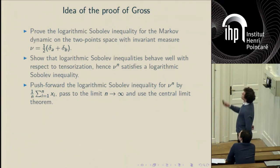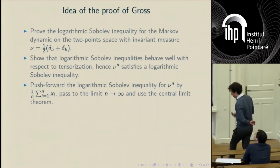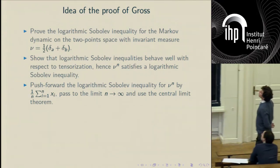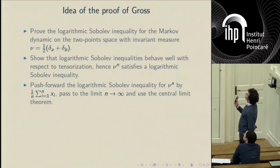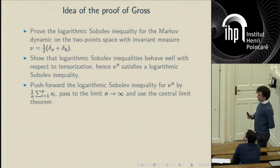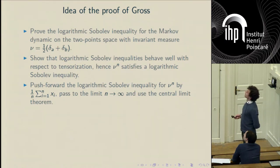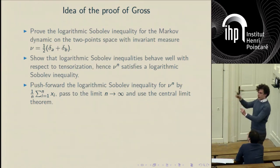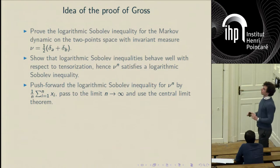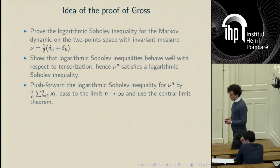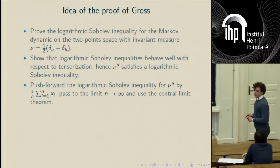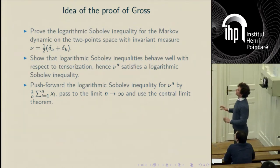I will give a very short overview of the proof by Gross. First, you prove a logarithmic Sobolev inequality for a very simple Markov dynamic on a two-point space with invariant measure one-half — you just jump from one point to the other with probability one-half. This is very easy to prove and in this case it's an equality because everything is straightforward to compute.